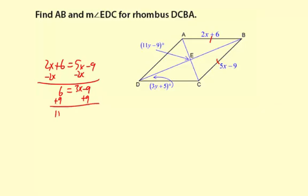6 and 9 is 15, equals 3x. Divide by 3. 15 divided by 3 is 5, so x equals 5.